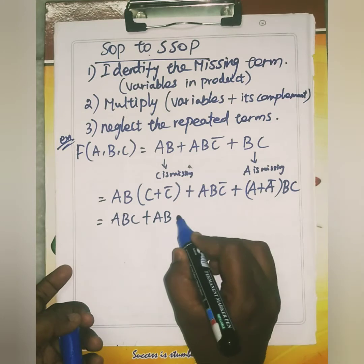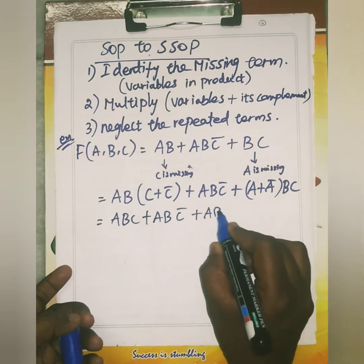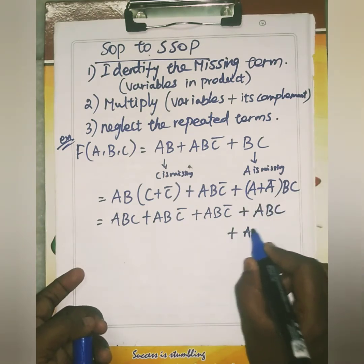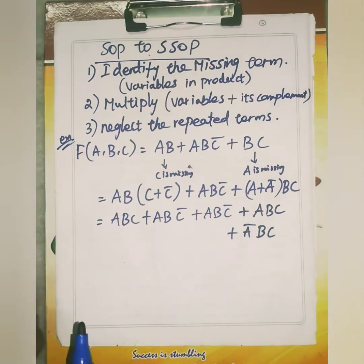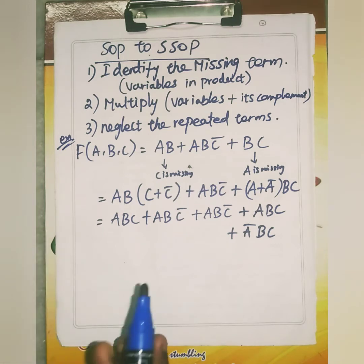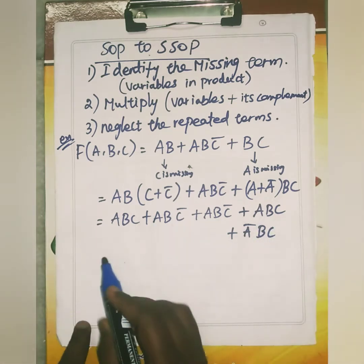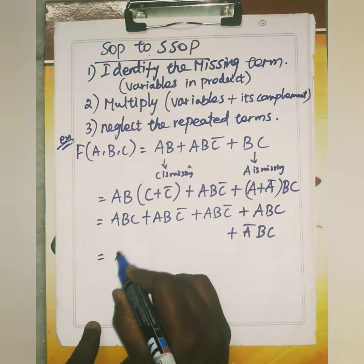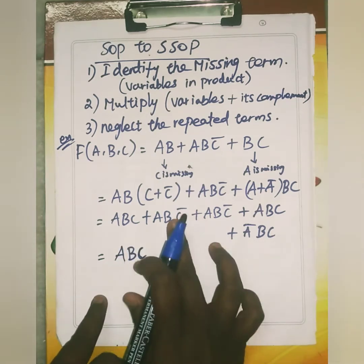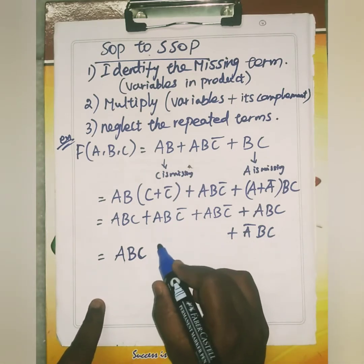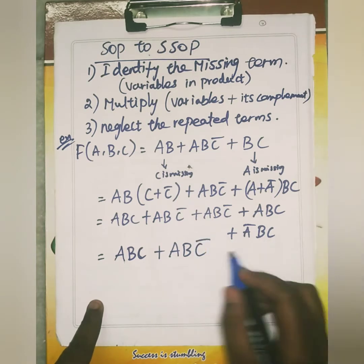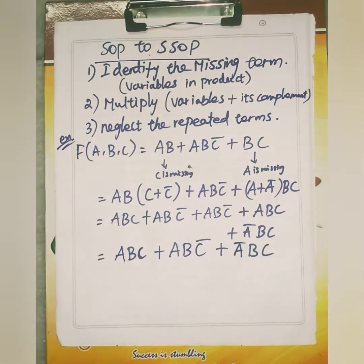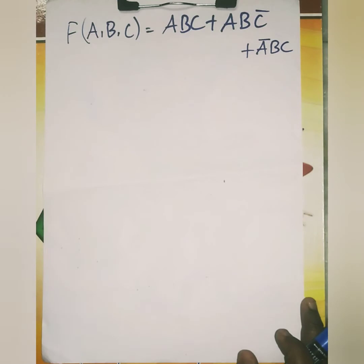Expanding: ABC plus ABC bar plus ABC bar plus ABC plus A bar BC. Now applying the third condition — neglect repeated terms. ABC is repeated, so keep one. ABC bar is also repeated twice, so keep one. The final expression is: ABC plus ABC bar plus A bar BC.